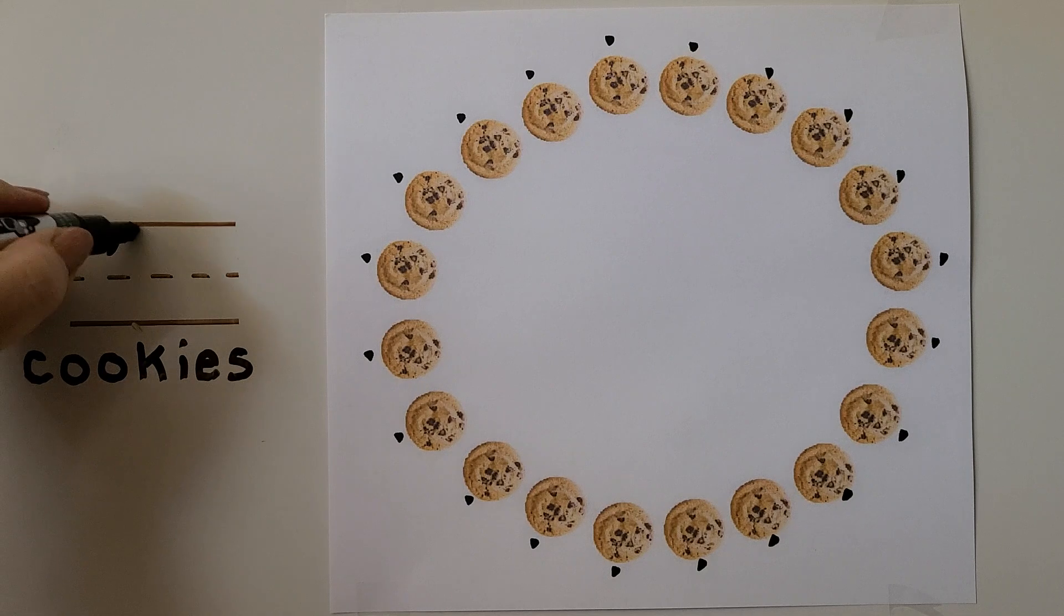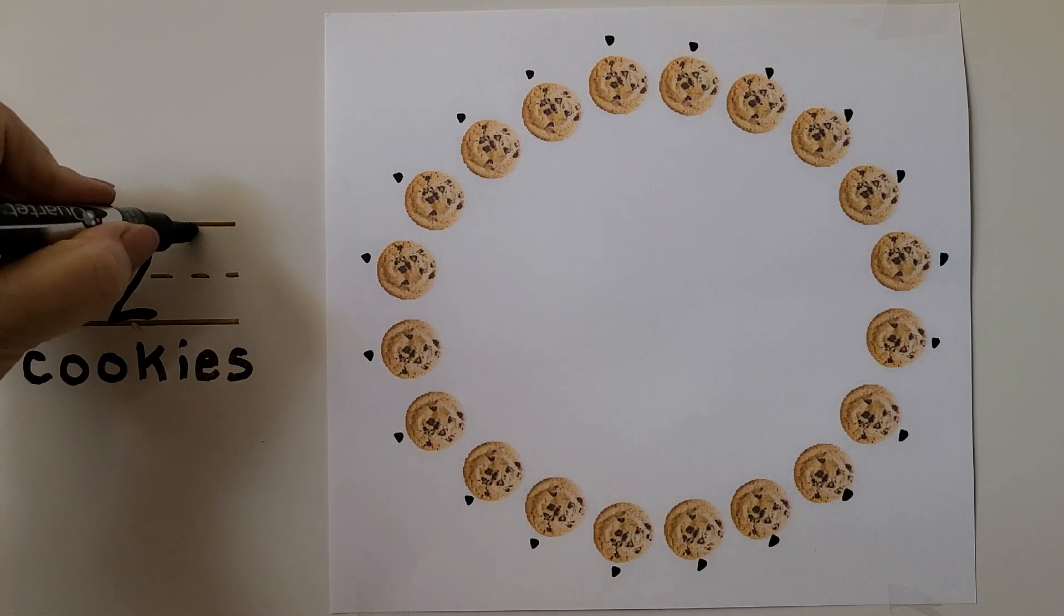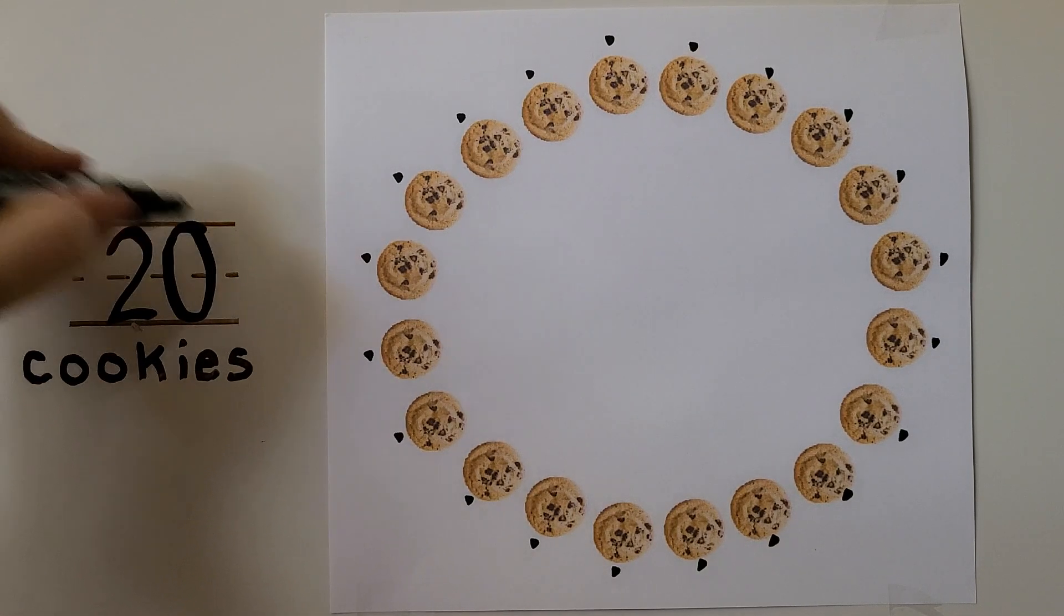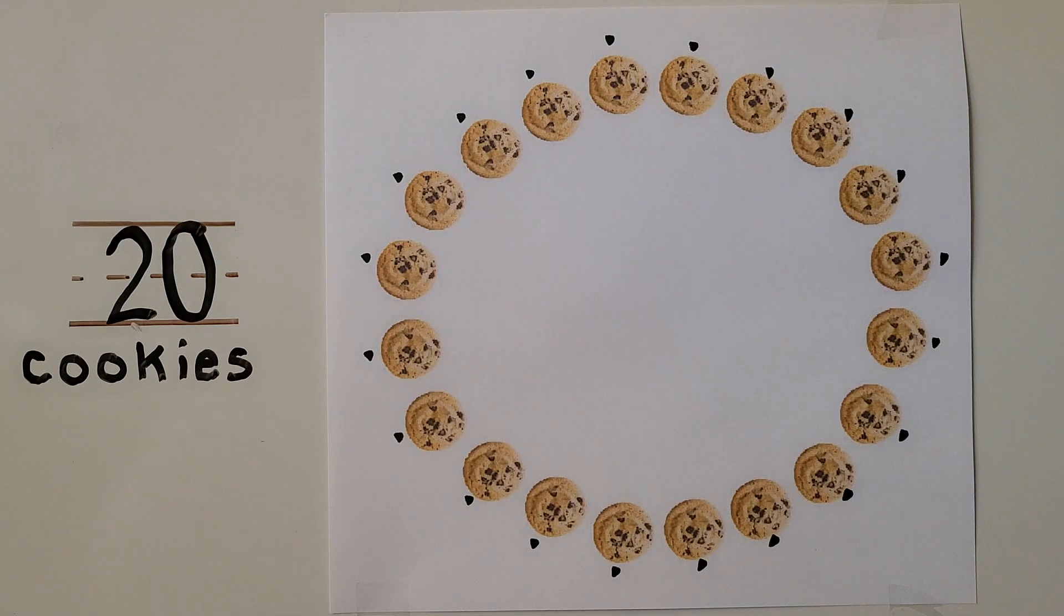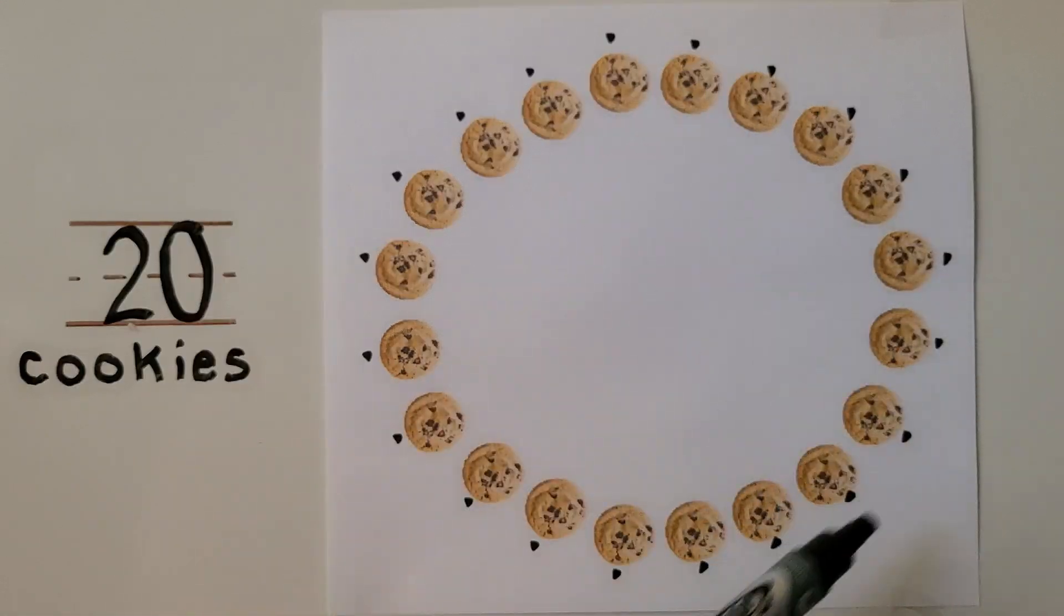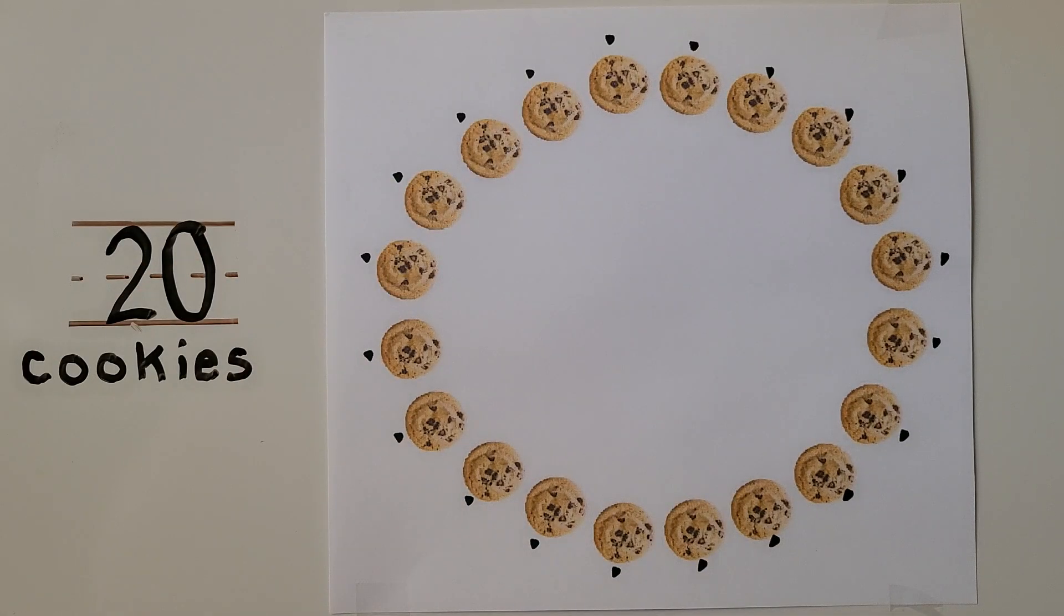We can write 20. It's a 2 with a zero next to it. 20 cookies. We know we counted all of the cookies because we put a dot next to each one as we counted them. There's 20 cookies in all.